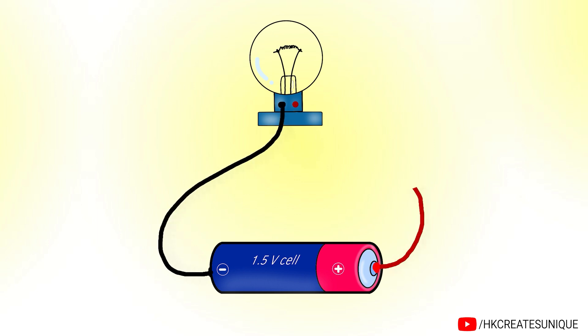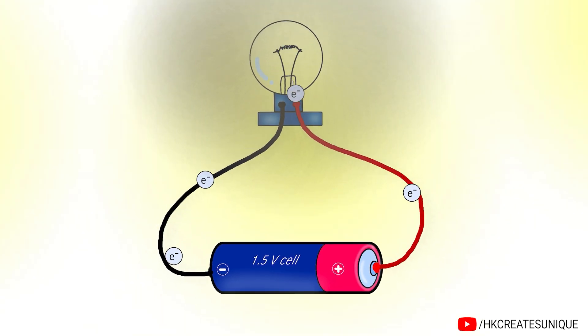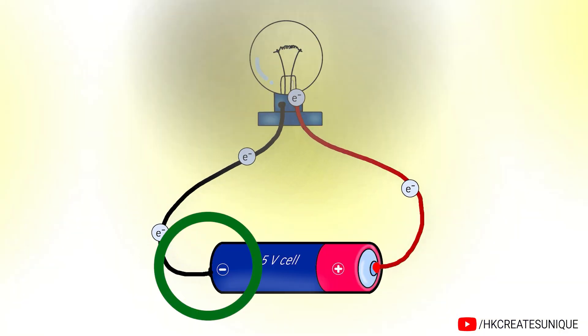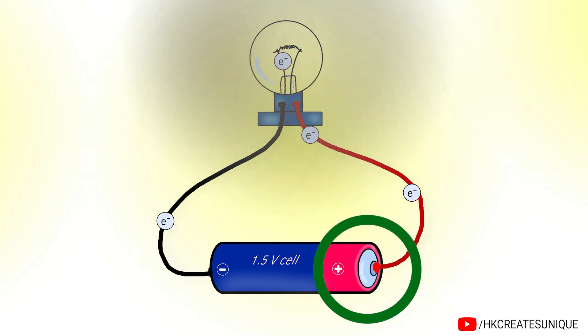First, what is current? When a 1.5V cell is connected across a bulb, charges flow through the circuit and the rate of charge flow is called current. Only negative charges, that is electrons, flow in a circuit from the negative terminal of the source, then through the load and finally to the positive terminal of the same source.